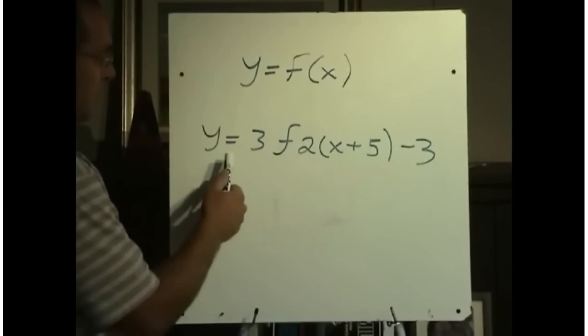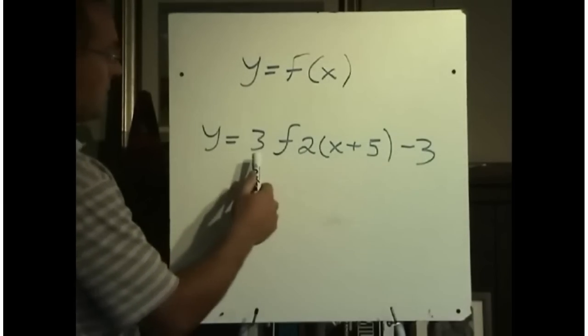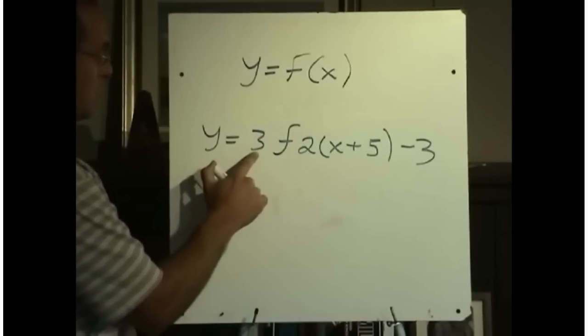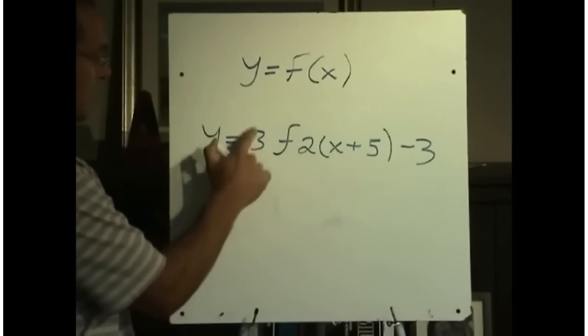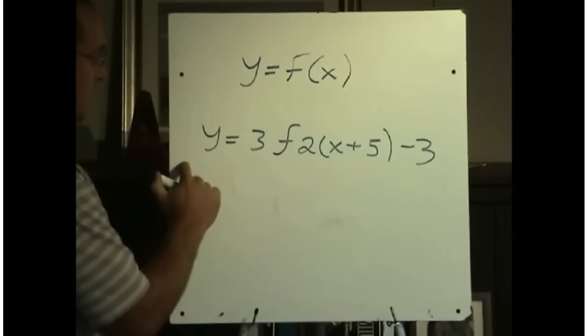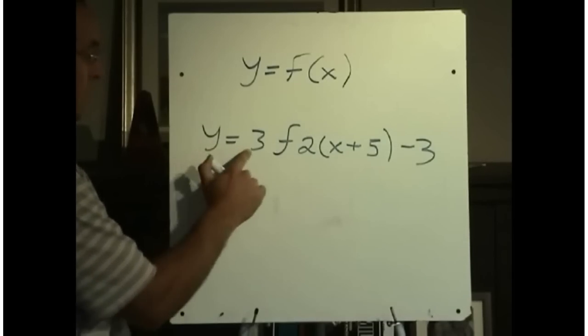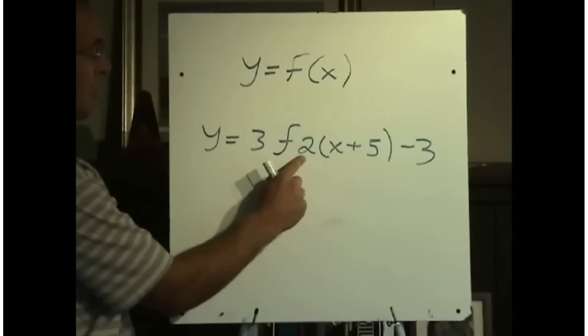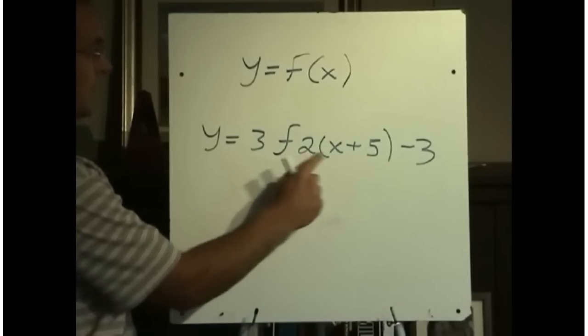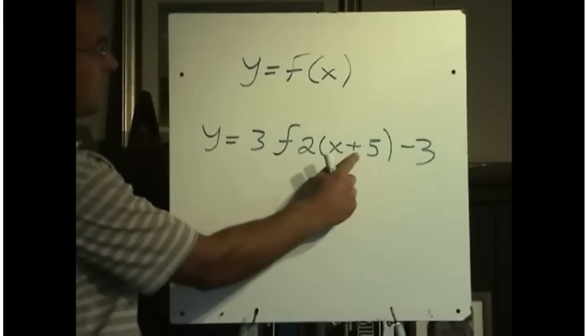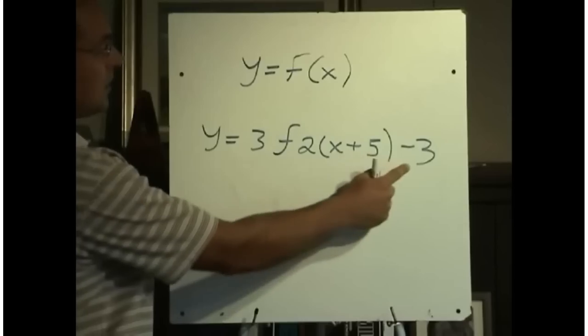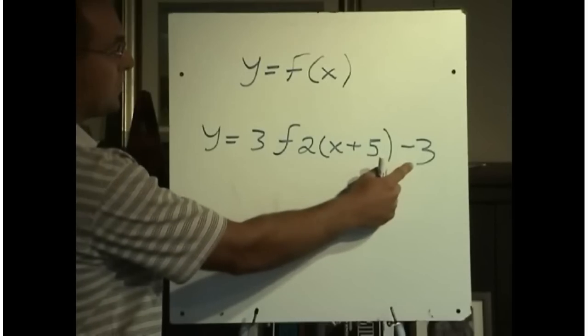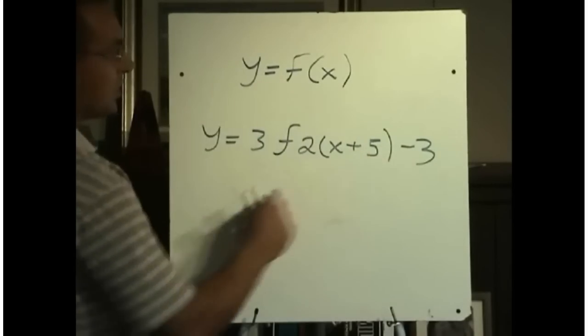We would simply move from left to right in working through our transformations. So the three here is like a one-third y on this side. When you replace y with one-third y, that would be a vertical expansion by a factor of three. Here x has been replaced with 2x, so we would have a horizontal compression by a factor of one-half. Then x would be replaced with x plus five, so we're going to move left five. And finally we're going to move down three. This is like a y plus three, so we're going to move down three.